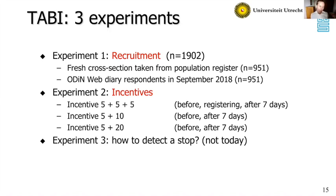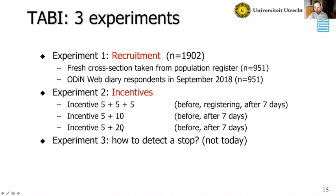The second experiment was about incentives — we wanted to see whether incentives would help. There were three conditions. Everyone received five euros unconditionally with the invitation letter. Then the first group got another two times five euros: once for registering the app and once after completing the whole study. In the second condition, they received the same total of ten euros but only after completing the entire seven-day study. In the third condition, we increased this conditional incentive to twenty euros.